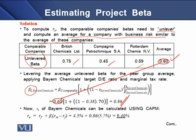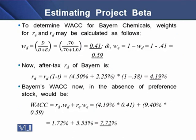Now that we have computed the beta of 0.86, we use it in the CAPM model along with the risk-free rate and the market return to determine the cost of equity for this company, which is 9.4 percent. We then determine the weights of the capital structure components. The weight of debt comes to 0.41, and deducting this from 1, the weight of equity comes to 0.59.